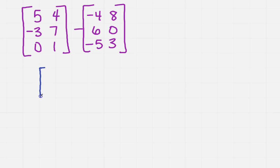I do want to show each step to make sure we're all together. So we're going to take 5 minus negative 4. We're going to have 4 minus 8, minus 3 minus 6, 7 minus 0, 0 minus negative 5, and 1 minus 3.